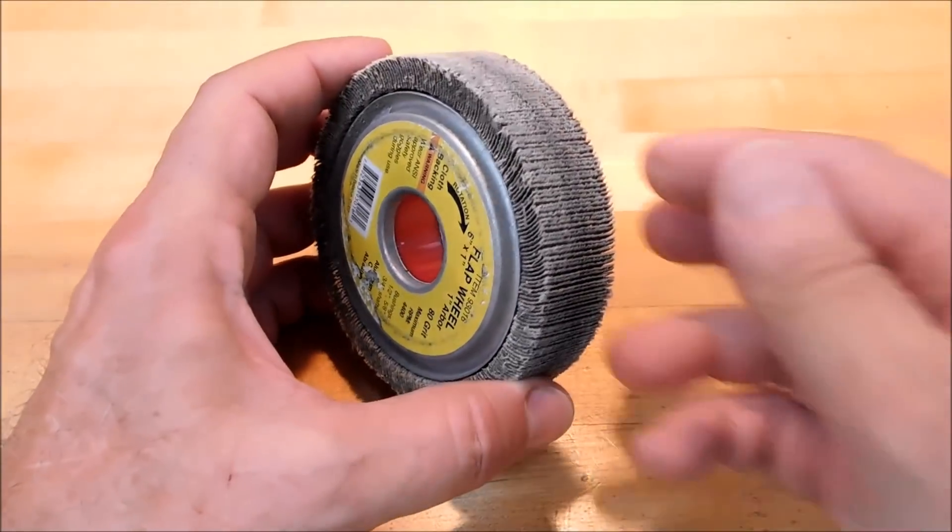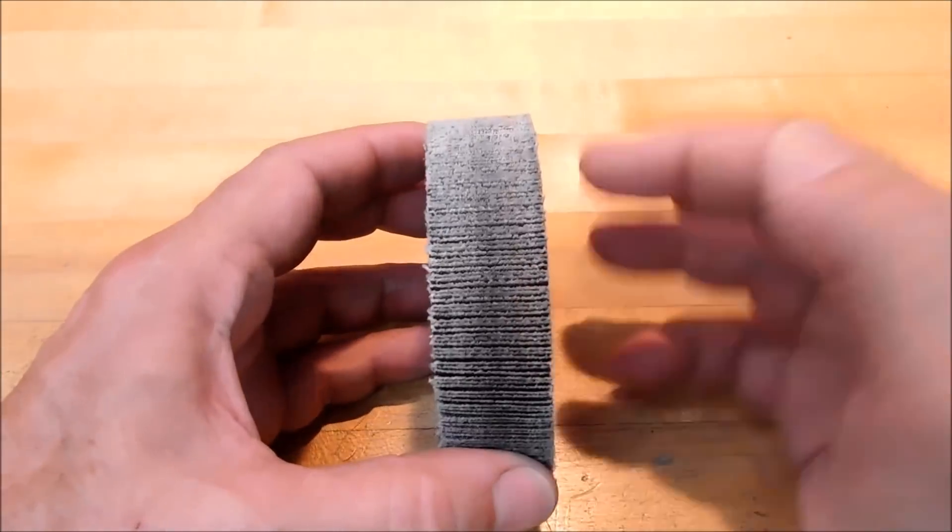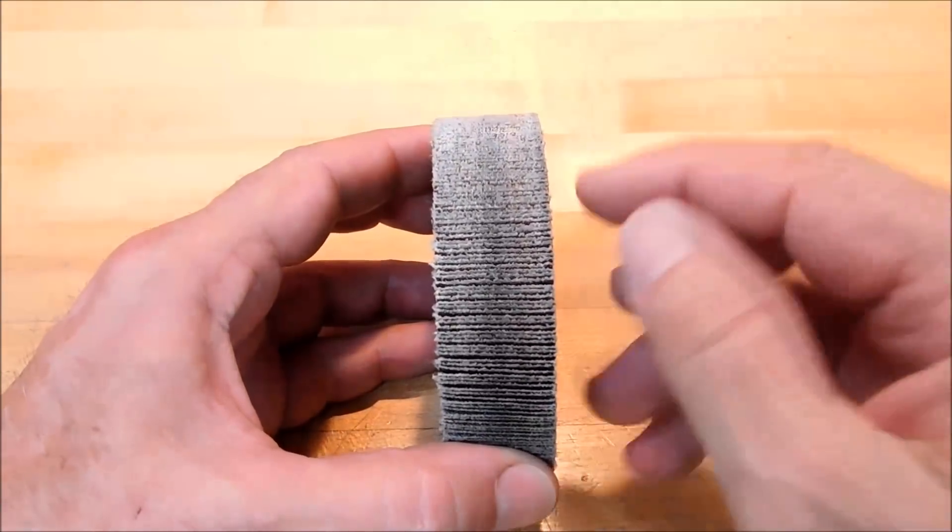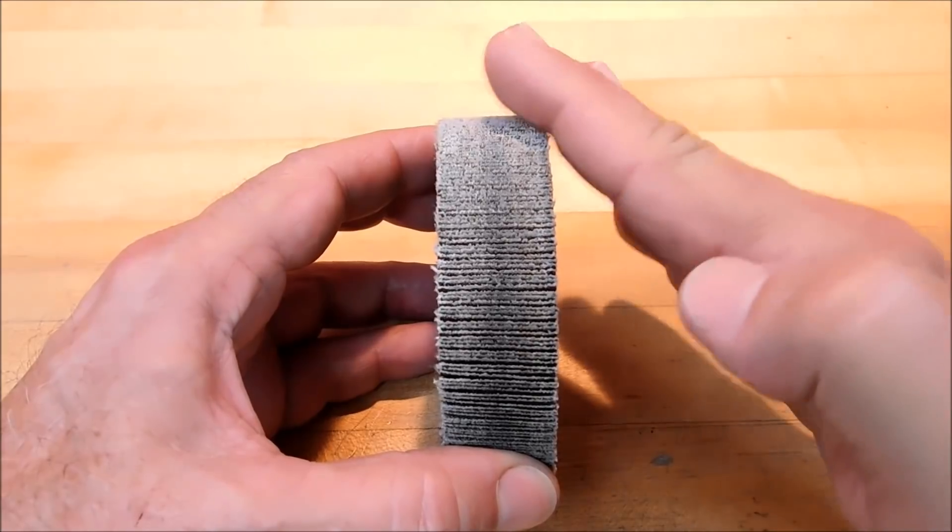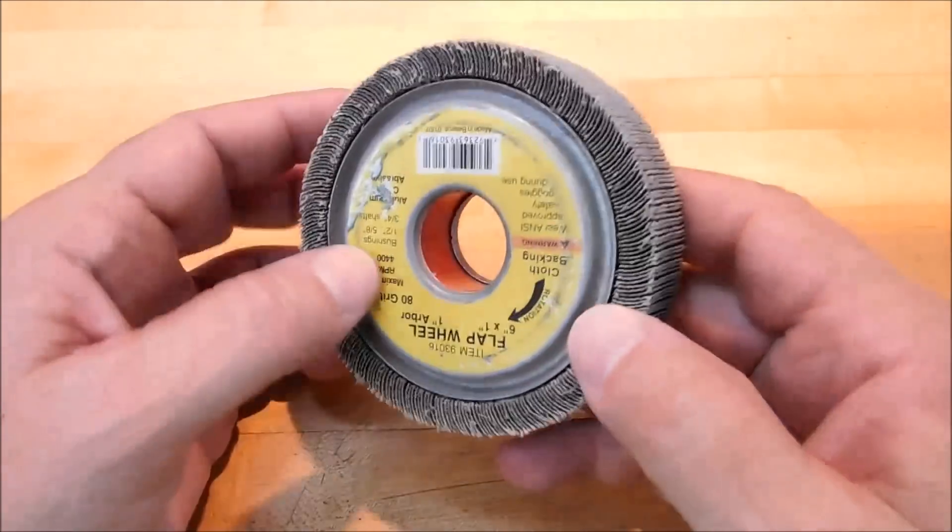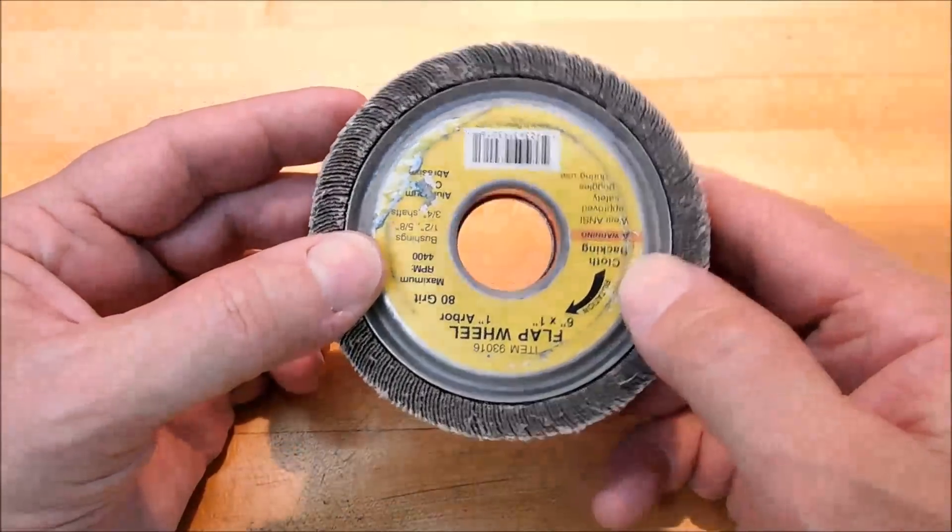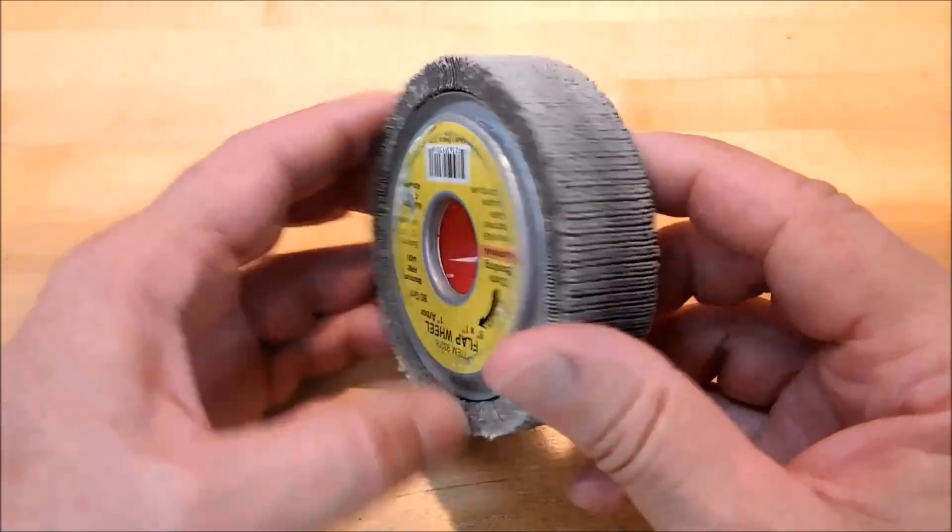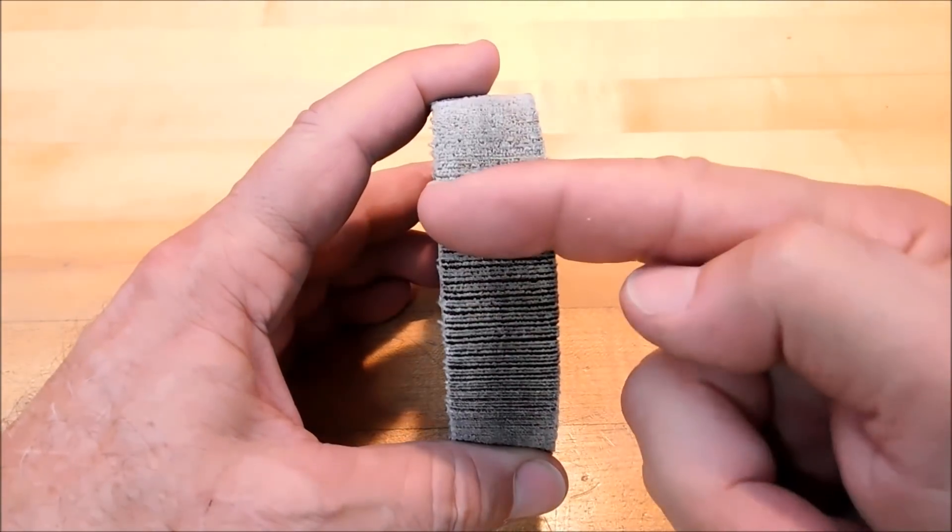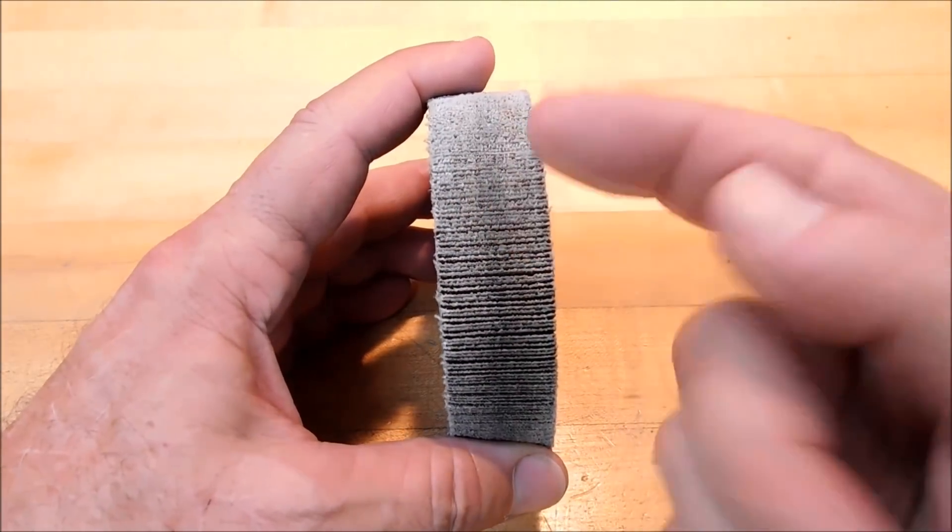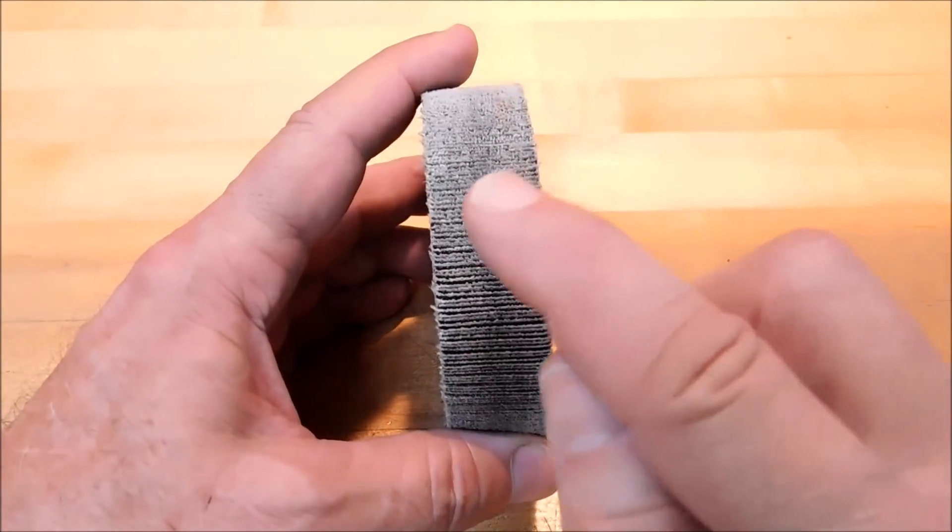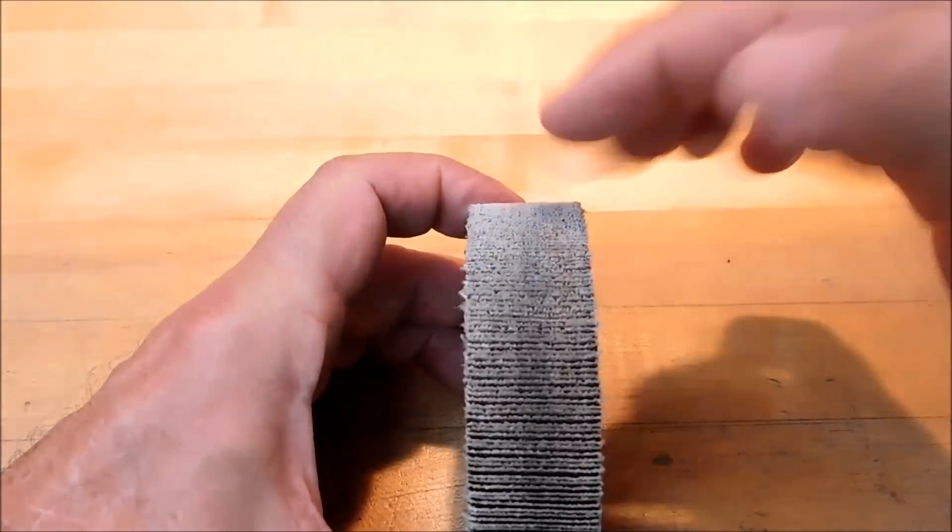If you've ever used one of these, you know that it never maintains this shape. There's always digs in it, gouges, broken corners. They are horrible if you're going to bounce around in between pieces because anytime you try to dress them, you just sand down whatever it is you're trying to dress it with.